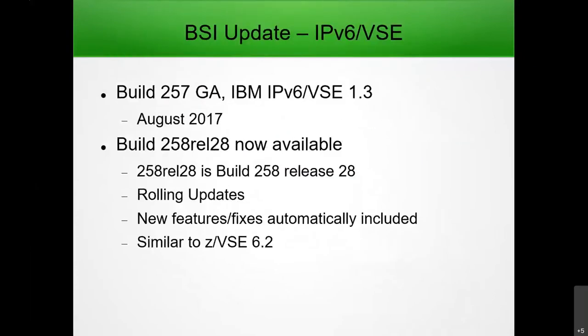The current official GA, which we don't really do anymore, is still 257, equivalent to IBM's IPv6/VSE 1.3, dating to August 2017. Where we currently are is build 258 release 28. We have gone to rolling updates, so all new features and fixes are automatically included in each new release — no patches, everything incorporated into source. It's pretty similar to the way VSE 6.2 is doing it with their rolling update process.